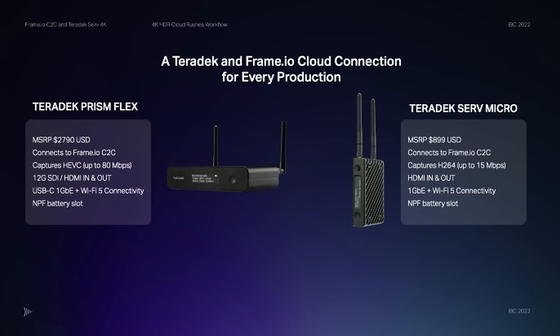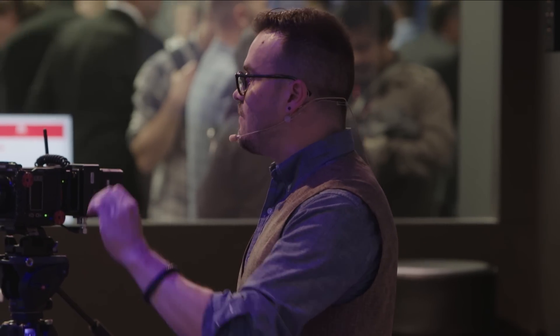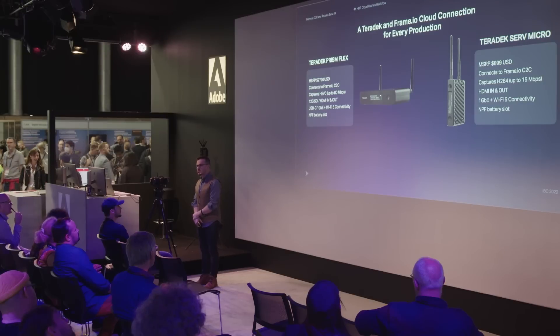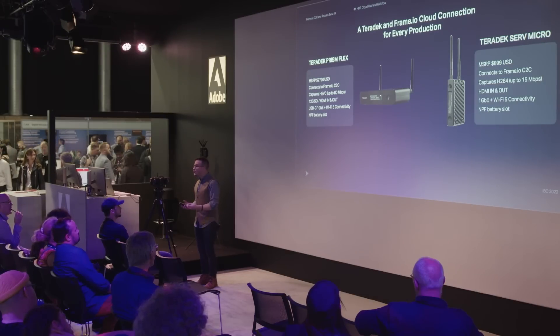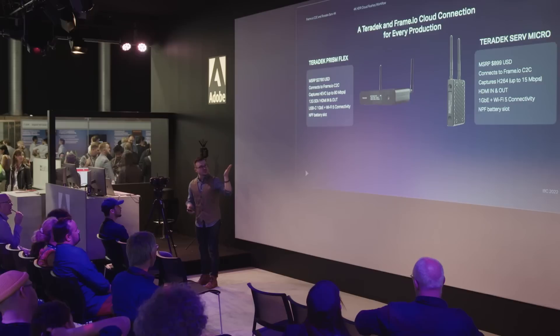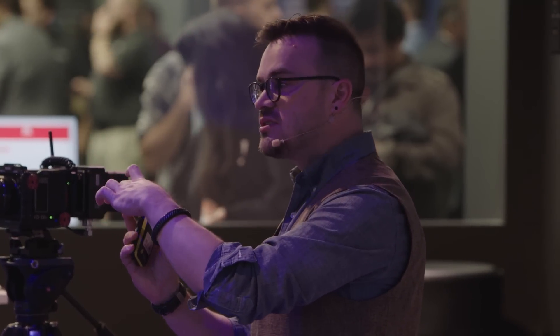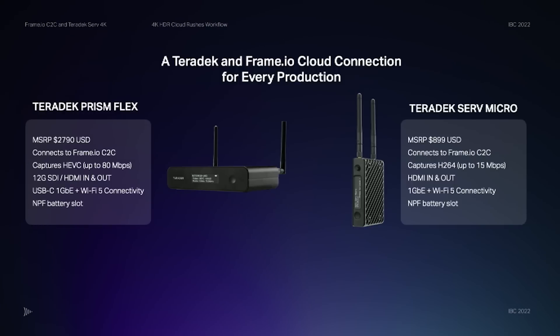We also have two other devices. Some people don't want the device on the camera — they want it on a desk. That device is called the Prism Flex, and if you want to transmit takes directly from a machine room or control room to the cloud, the Prism Flex is the right device. And if you want something small for an HDMI device, there's the Serve Micro — a small device about the size of a deck of cards that allows you to connect HDMI cameras right to the cloud at a lower price point.